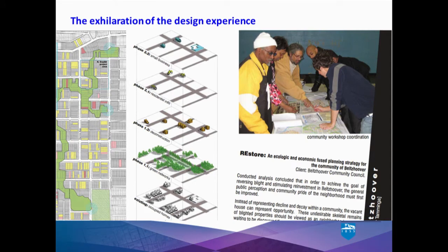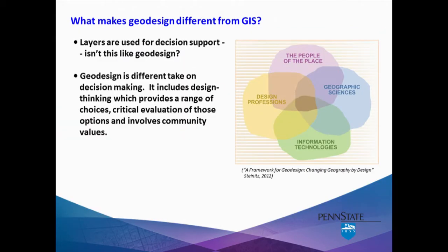I want to focus on this because the term geodesign is still relatively new. So what makes geodesign different from GIS? The GIS community has been using layers for decision support for quite a while to great effect. And some people tend to think that that is geodesign, but it's really not. For example, weighted overlays really only tell you where something may or may not work. So geodesign is a different take on decision-making.